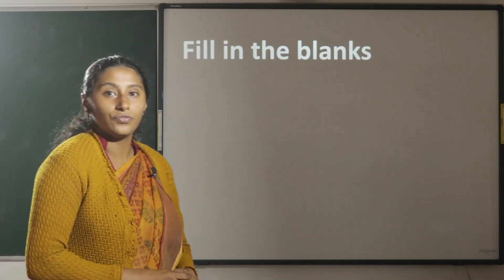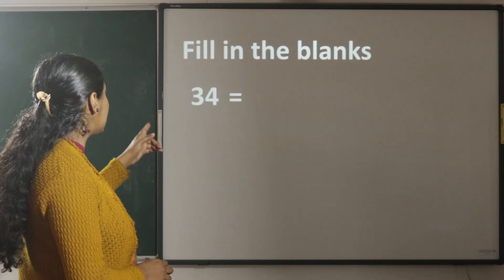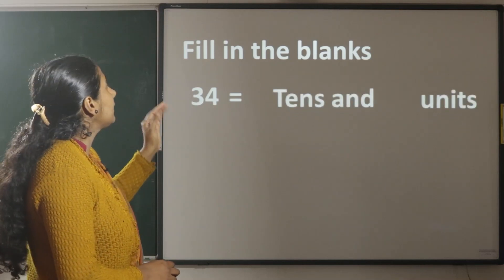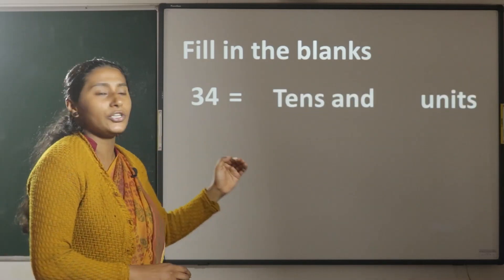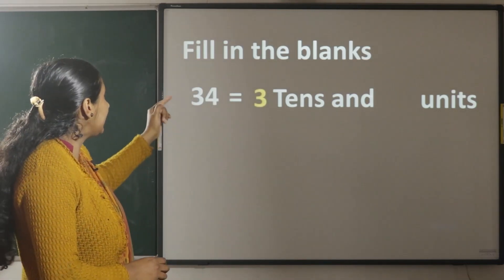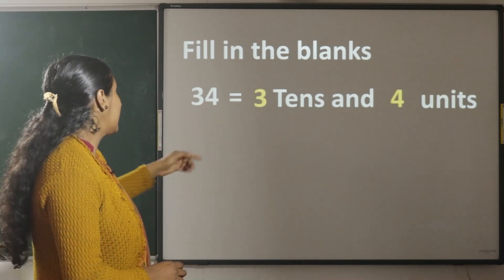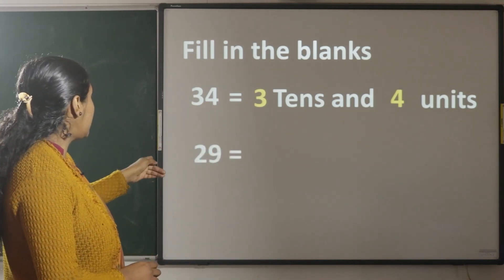Now, let us fill in the blanks. 34 is equal to blank tens and blank units. In 34, there are 3 tens and 4 units. Second one, 29.